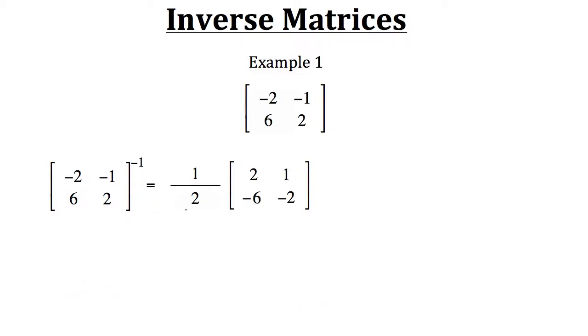Now from here, all we need to do is take this scalar of 1 half and multiply it to every element in this matrix. And then we'll get the inverse matrix as our result. So first, we have 1 half times 2, which gives us a value of 1. Then 1 half times 1 gives us a value of 1 half. Then 1 half times negative 6 gives us negative 3. And then 1 half times negative 2 gives us a value of negative 1.